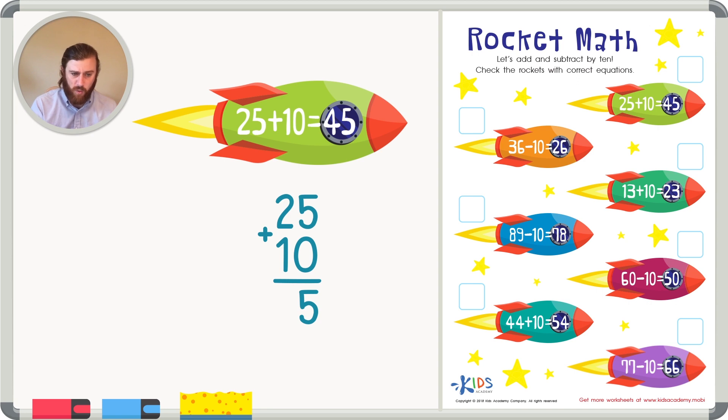And 2 plus 1, well 2 plus 1 equals 3. So 35 is not the same as 45. So this first rocket is not correct, so we are not going to check that.